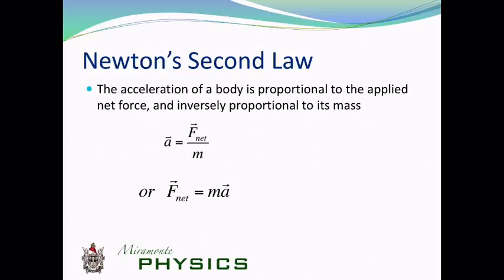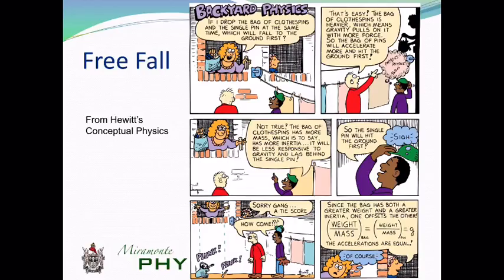So Newton's second law, as we found, was acceleration is directly related to the force. Big acceleration means a big force, or big force means big acceleration. And by the same token, if the mass gets really big, the acceleration is going to get small. So the acceleration and the mass are inversely related. We often write it, it's most commonly written as F net equals mass times acceleration. But you also see it with the acceleration rearranged as well.